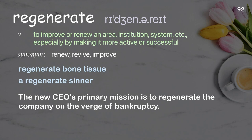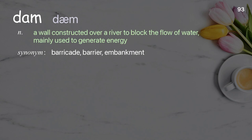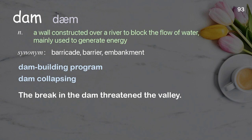Dam: a wall constructed over a river to block the flow of water, mainly used to generate energy. Examples: dam building program, dam collapsing. The break in the dam threatened the valley.